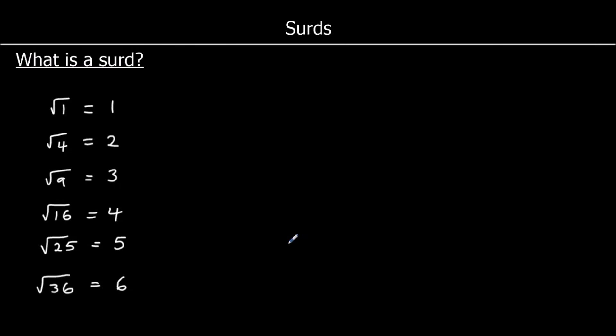But what about all the square roots in between these numbers? So root 2, root 3, root 5, root 6, root 7, root 8, root 10, root 11 — all of these other square roots we call surds. These are square roots that cannot be written as whole numbers. For example, root 2 cannot be written as a whole number. It's 1.414 and so on. If I try to write it as a decimal, I could be writing numbers forever — it never ends, and there's no pattern to the numbers.